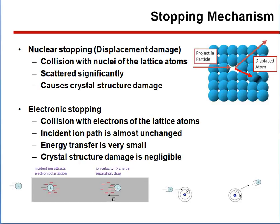Nuclear stopping is collision with the nucleus of a lattice atom. It is scattered significantly and it causes crystal structural damage.